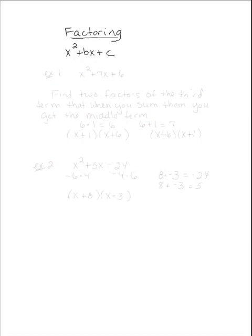Here we are going to look at factoring in two different types of problems. The first one we are going to start with is the most basic way to factor, and this is when there is just a coefficient of one in front of the x squared term. So it would look something like x squared plus bx plus c. When there is only a coefficient of one in front of x squared, it actually requires just one step, so I call it the one-step factoring type of problem.